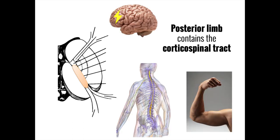We'll start with the posterior limb. The posterior limb contains a pathway known as the corticospinal tract, so named because it carries motor impulses from the cortex to muscles throughout the body via the spinal cord.